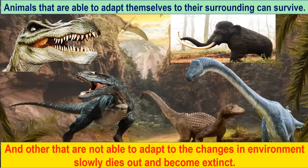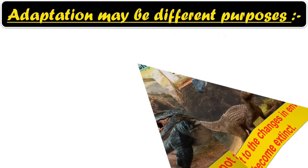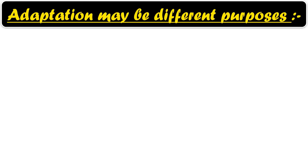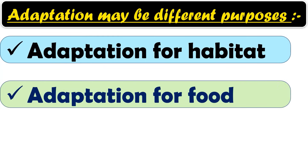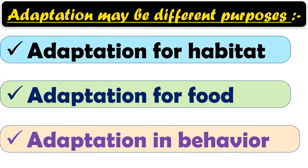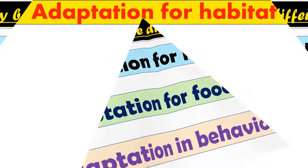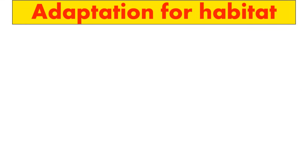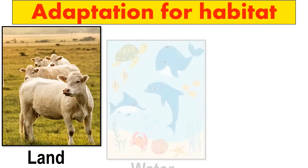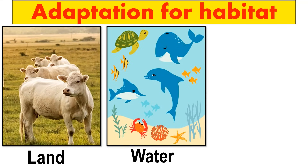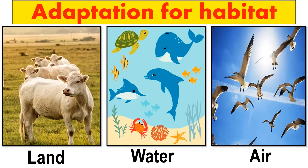An example of extinction is the dinosaur. Adaptation may serve different purposes: adaptation for habitat, adaptation for food, and adaptation in behavior. Let us look at them one by one in detail. Some animals live on land, some in water, and some spend their time in air.